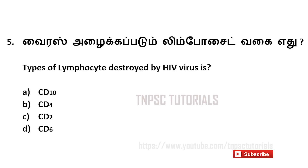Fifth one. The type of lymphocytes destroyed by HIV viruses. A) CD10, B) CD4, C) CD2, D) CD6. And the answer is B — CD4.